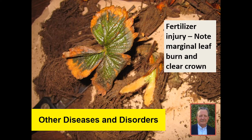Looking at a few other diseases and disorders — this sample came into our plant disease and insect clinic. A couple of clues that this is not a crown rot disease: when you cut the crown open it's clear inside with no discoloration, and there's marginal leaf burn on the leaves, which is very indicative of salt injury or chemical injury. This turned out to be fertilizer injury. So proper diagnosis is important because this is not caused by a disease.